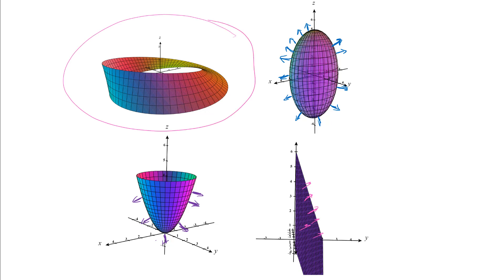The one we haven't talked about yet is actually a non-orientable surface. We looked at this when we looked at parameterized surfaces in CalcPlot 3D. This is a Möbius strip — it's a famous surface with all kinds of interesting properties. This is a static picture from CalcPlot 3D, so I can't rotate it around, but you can go in there and rotate it yourself.